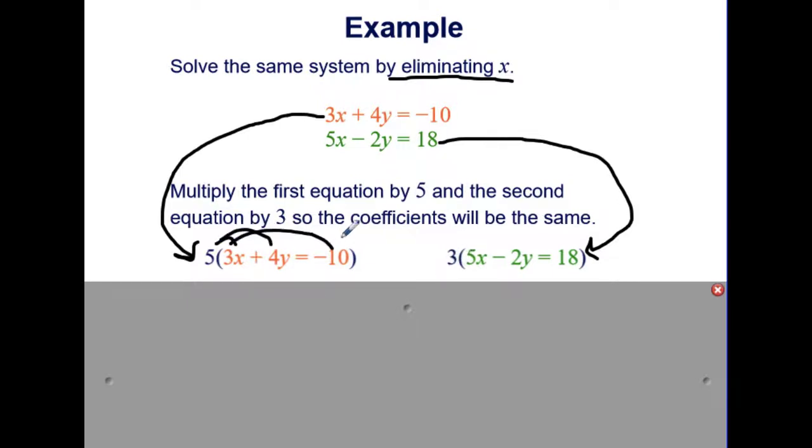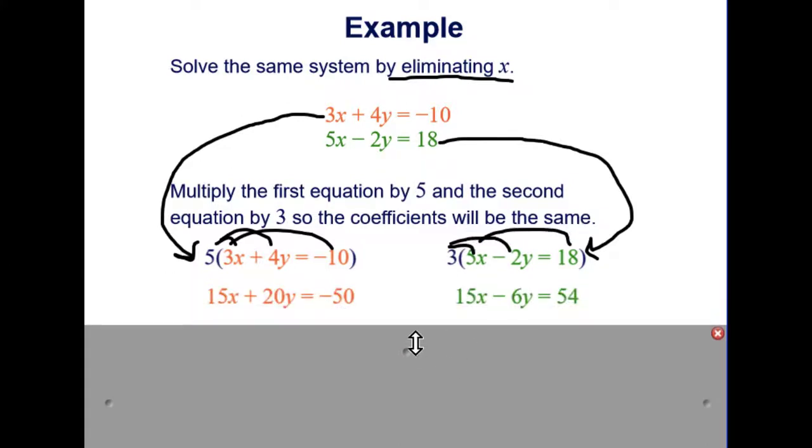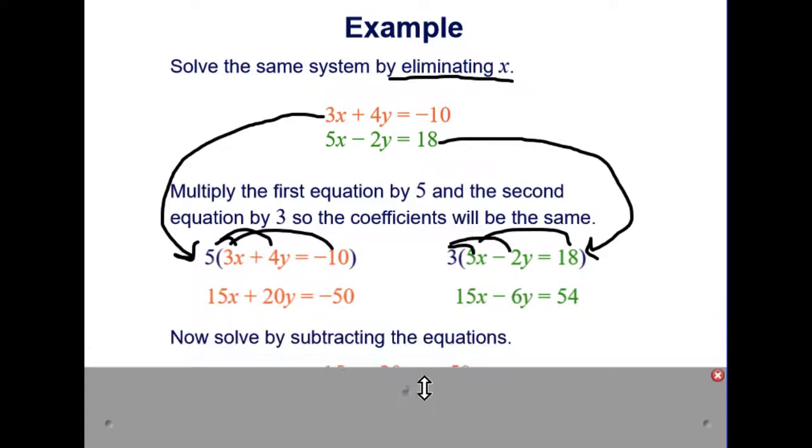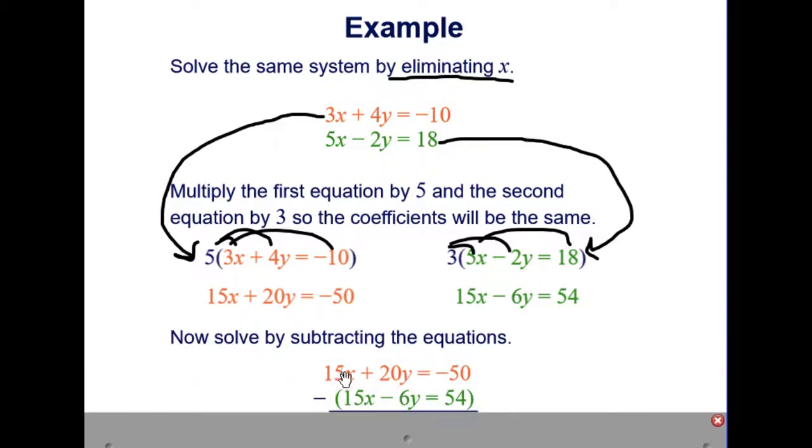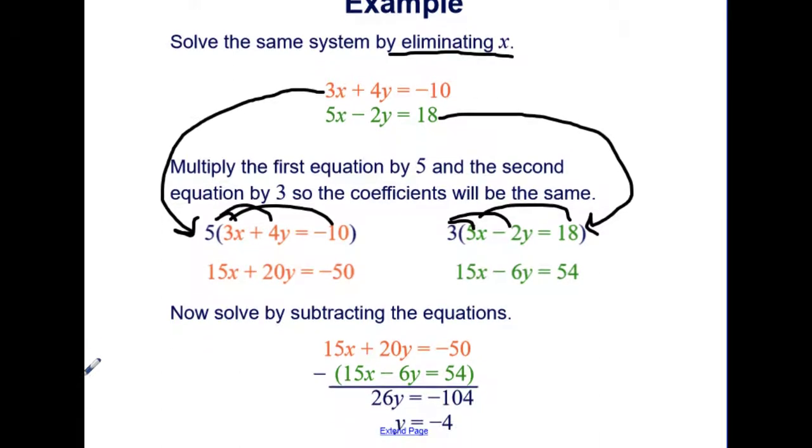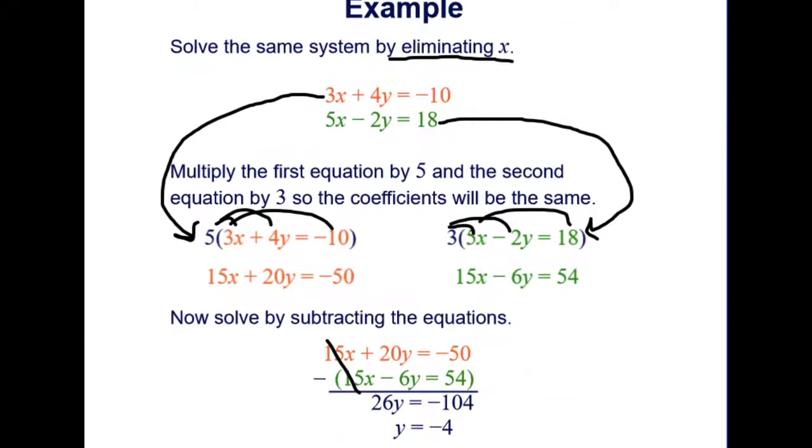Distributing both will create new equations that now have opposite coefficients, 15x and 15x. So we can subtract, which will eliminate the 15x's and 20y minus a negative 6y, 26y. Negative 50 minus 54, negative 104. And dividing by 26 will get y equals negative 4.